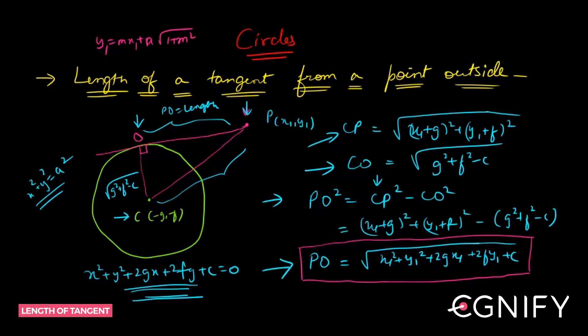So when you put in the values and solve it, you will get the length of the tangent PO to be equal to this quantity, right? x1 square plus y1 square plus 2gx1 plus 2fy1 plus c.